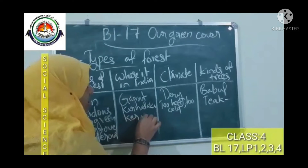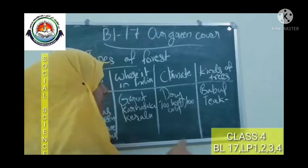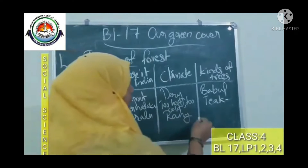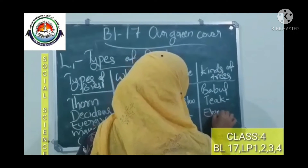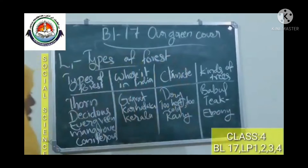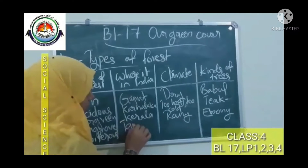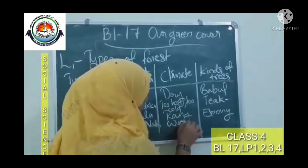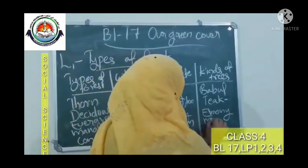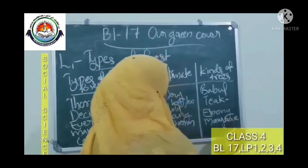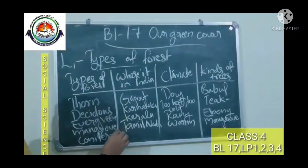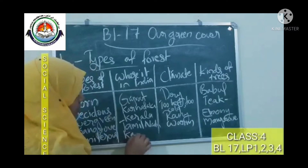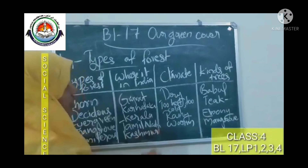Evergreen forests can be found in Kerala and Northeast India. The climate is rainy. Kinds of trees: Ebony. Next, mangrove forest — we can find it in Kerala and Tamil Nadu. The climate is warm. Kinds of trees: gray mangrove, found especially in Tamil Nadu. Coniferous forest is found in the Himalayan region, especially in Kashmir.